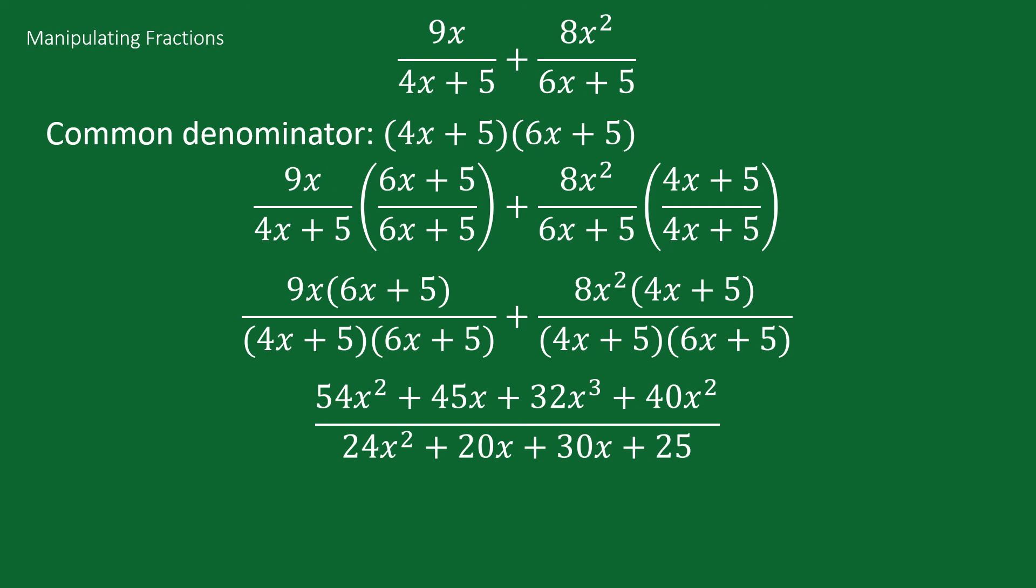And now we can combine like terms to get our simplified answer. So we get 32x cubed plus 94x squared plus 45x all over 24x squared plus 50x plus 25. So we still use the same rules, it just looks a little bit more complicated when you add variables in.